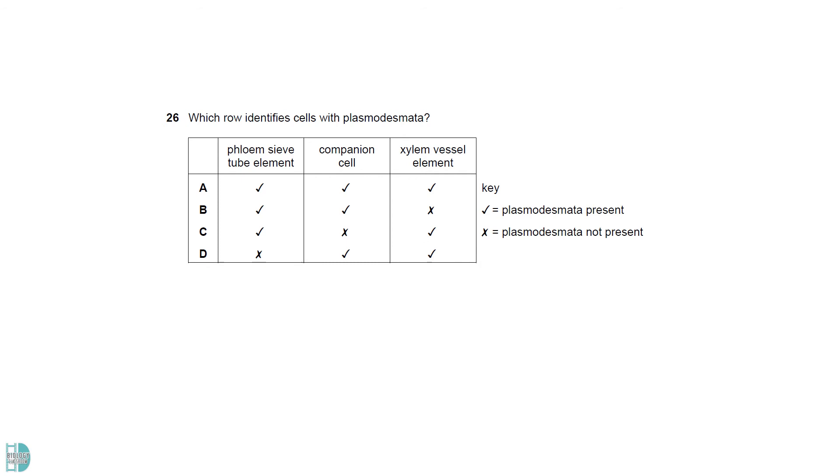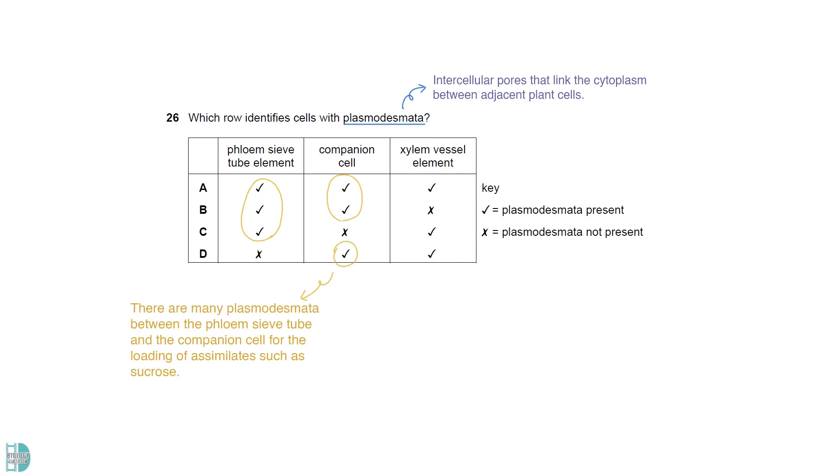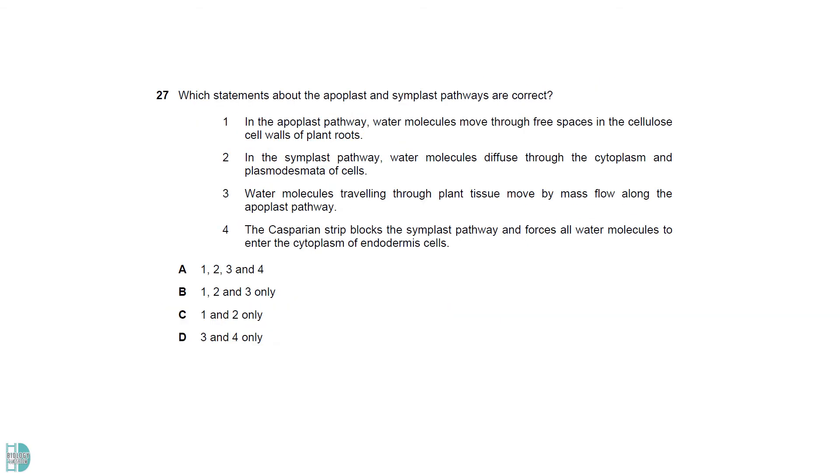Plasmodesmata are the intercellular pores that link the cytoplasm between adjacent plant cells. There are many plasmodesmata between the phloem sieve tube and the companion cell. Xylem vessels have no cytoplasm so they do not have plasmodesmata. One and two are the definitions of the apoplast and symplast pathway. Three is correct. In the cell wall a large quantity of water molecules move together at the same speed. This is mass flow. Four is wrong because the Casparian strip blocks the apoplast pathway not the symplast pathway.